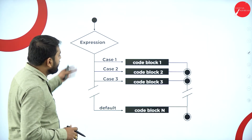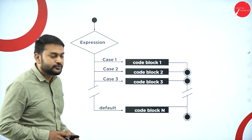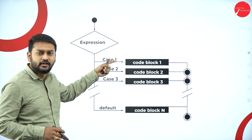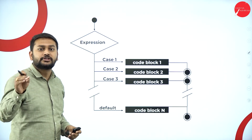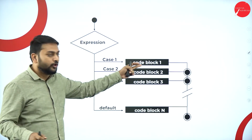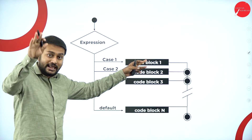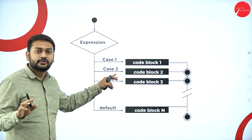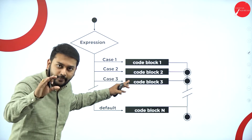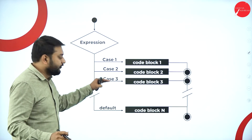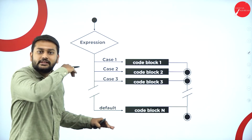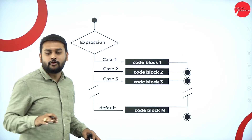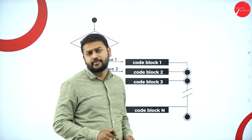Looking at the switch case flowchart: I pass the expression, and if it matches case one, case one's code block executes and the rest is skipped. If case two matches, only case two runs. If case three matches, only case three runs. If none of the cases match, the default executes.